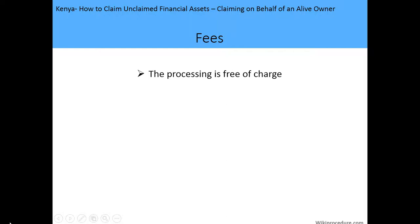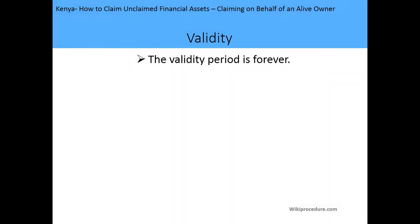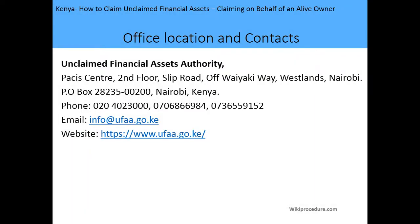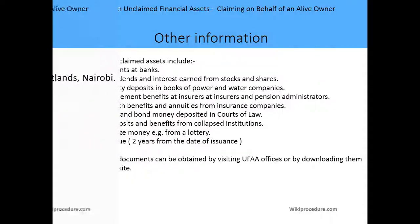The application fee is free of charge. The validity period of the application is forever. The processing time is usually 90 days, after which a gazette notice period of 30 days runs concurrently in the Kenya Gazette. The office of the Unclaimed Financial Assets Authority is located at Pacis Center, Waiyaki Way, Westlands, Nairobi. Their email address and website — www.ufaa.go.ke — are provided on screen.